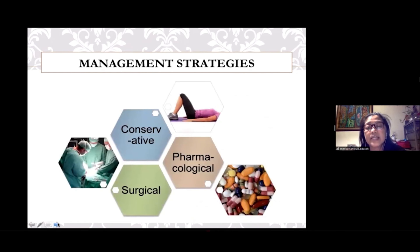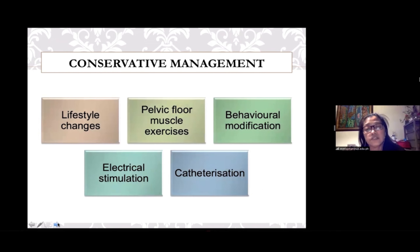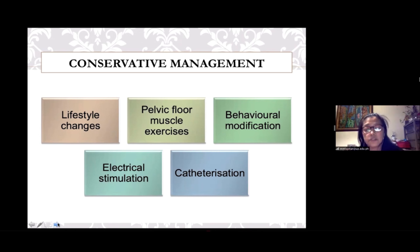Management of these conditions may be classified into conservative, pharmacological, or surgical. Conservative management for women with voiding dysfunction includes lifestyle changes such as weight loss, proper fluid intake, and limited caffeine and alcohol intake, which have been shown to improve overactive bladder symptoms. Pelvic floor exercises, whether focused on contracting or relaxing the pelvic floor, provide relief for both overactive and underactive bladder symptoms. Behavioral modification, particularly bladder retraining, has been shown in randomized trials to improve OAB by reducing urgency incontinence episodes. Electrical stimulation may improve symptoms of OAB in some women.